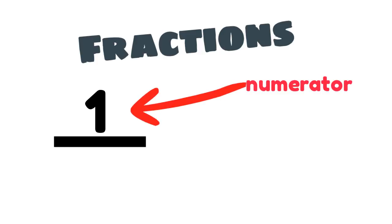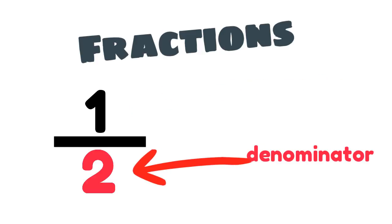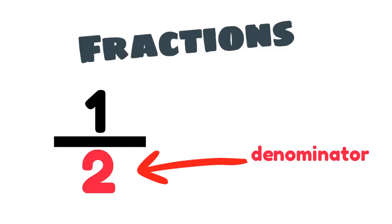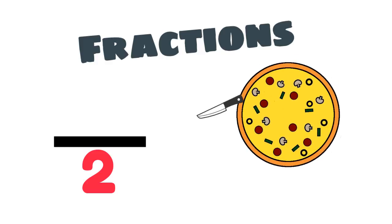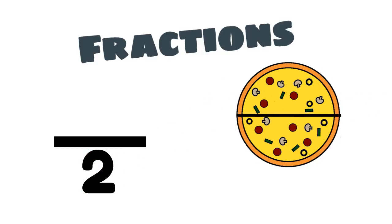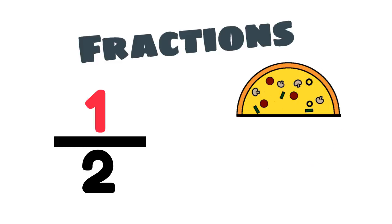A fraction has a numerator and a denominator. The denominator tells us how many equal parts the whole has been divided into. The denominator in this fraction is two, so it tells us that a whole has been divided into two equal parts. The numerator tells us how many of these parts we have. In this fraction, the numerator is telling us we have one of these equal parts. The fraction is one half.